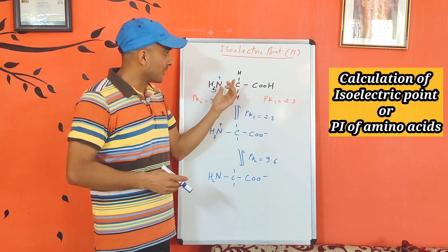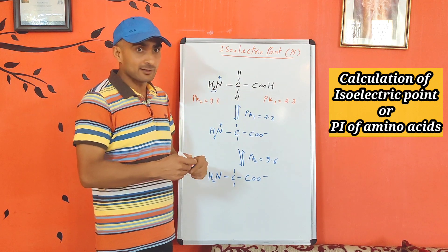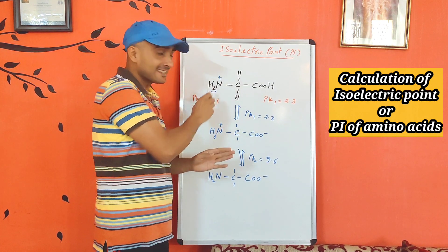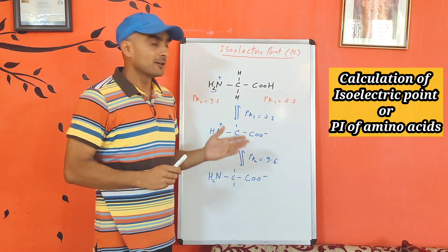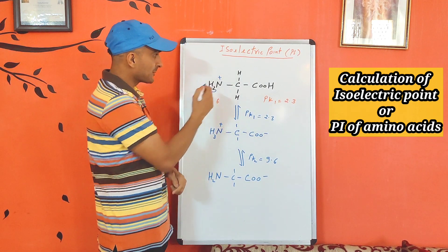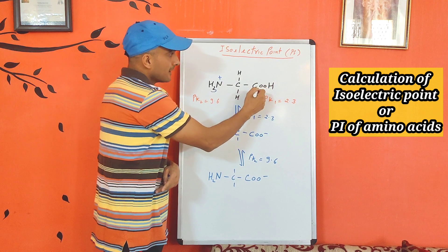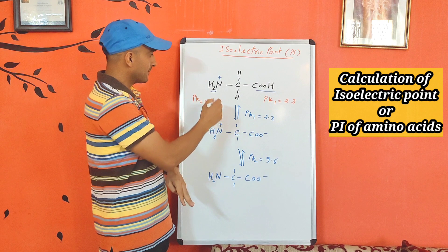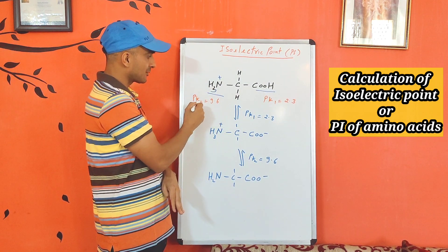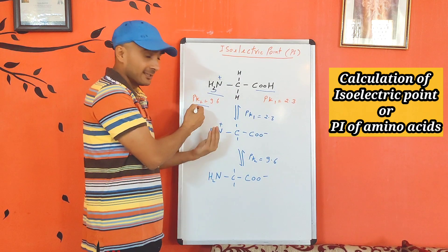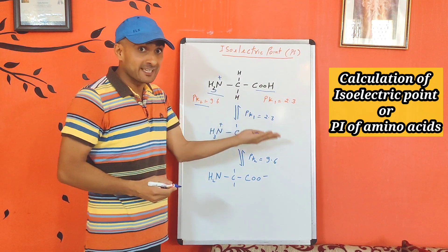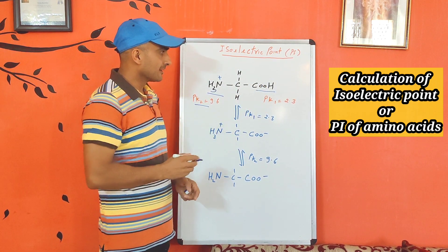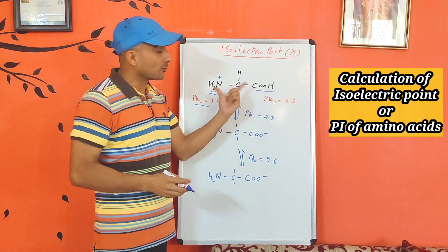The pH where you have net charge zero — where you have COO- and NH3+ existing — that pH value is called the PI for glycine. The two groups in glycine have pK values: the pK value for the acid group is called pK1, which is 2.3, and the pK value for the basic group is 9.6, called pK2 or sometimes PKB because it is the basic group. pK1 may also be called pKA because it represents the acid (carboxyl) group. When you increase pH, groups behave differently according to their pK values.